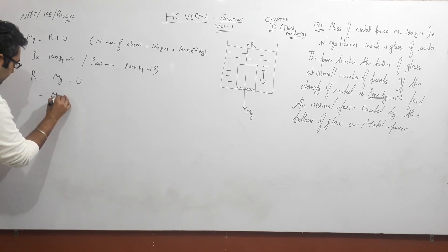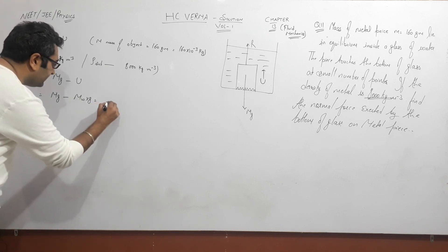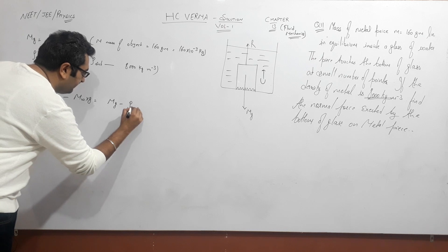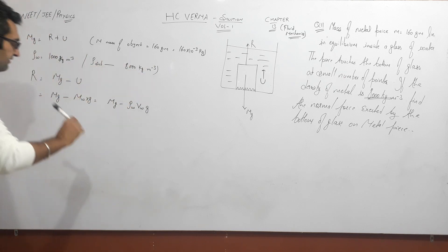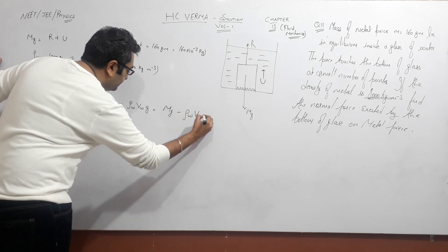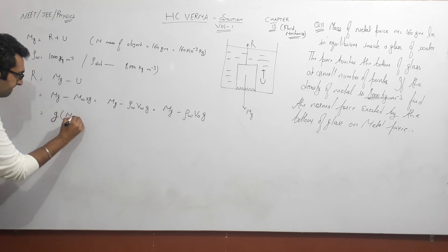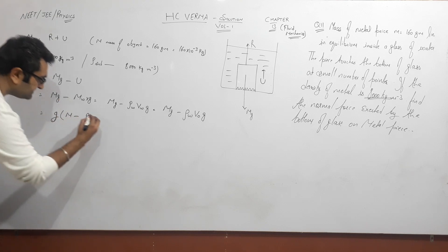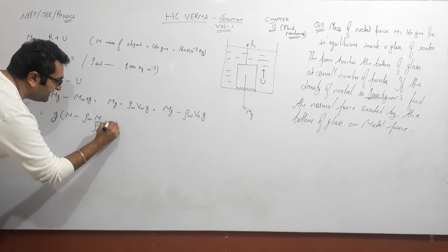So mg of water displaced, mass of water multiplied by g. Now what comes? Density of water times volume of object times g. Volume of object can be written as mass by density of what? Object. Object's mass is m, divided by density of substance. Multiplying by g throughout.